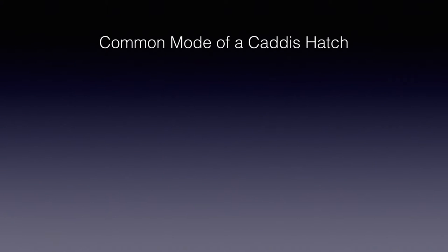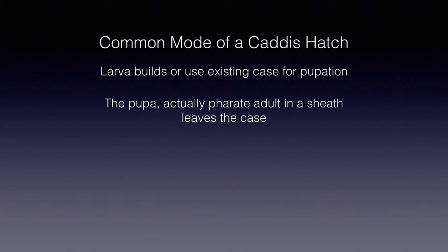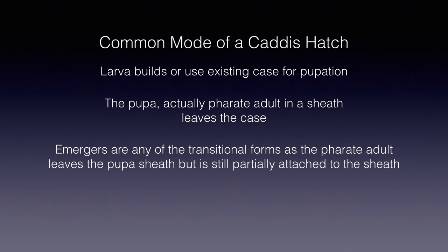There are variations we'll mention later, but most of the caddis larvae pre-emergent and emergent hatches follow what is the common mode. When the proper time comes, the caddis larvae builds or uses a current case in which to pupate on the bottom of the stream. When pupation is complete, what we call the pupa — but is actually a fully formed adult in a sheath — leaves the case on the bottom of the stream. After a variable time drifting near the bottom, gas forms between the adult and the sheath, and together with active swimming causes the pupa to rise to the subsurface.